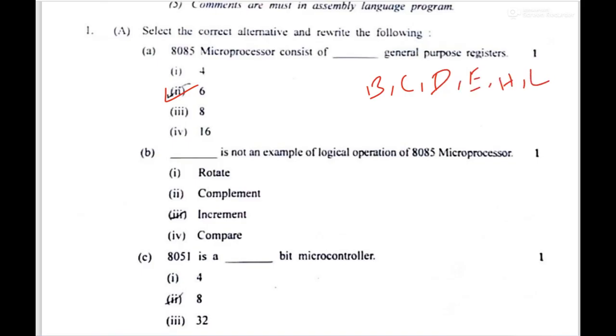By this two pairs combination it performed 16-bit operations. B, C, D, E, H, L. These are the 6 general purpose registers of 8-bit microprocessor, 8085.